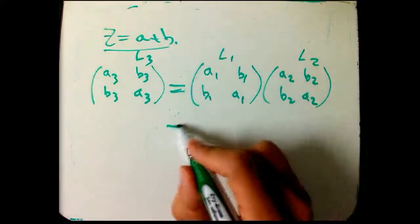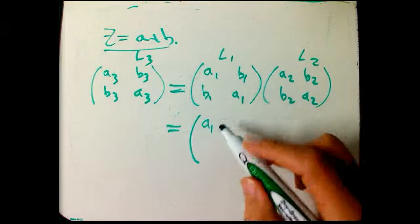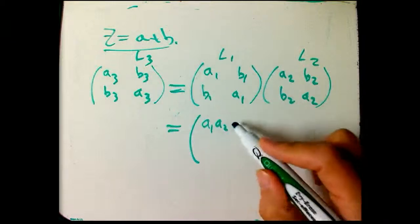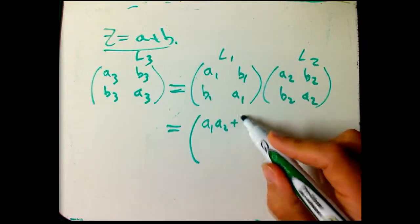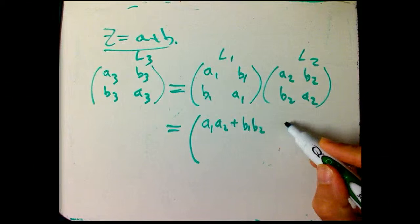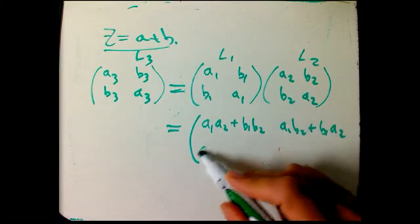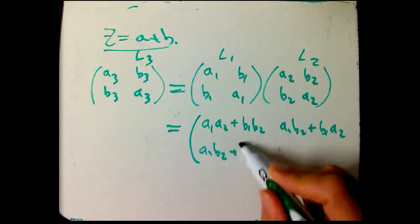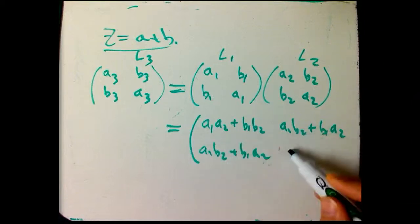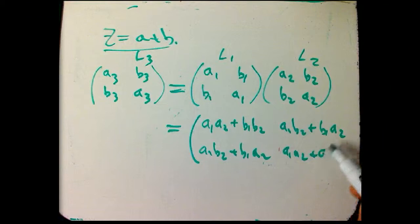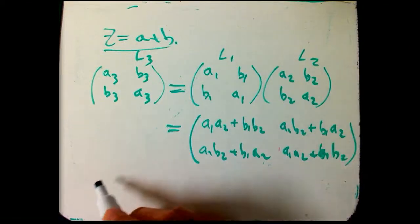So, I'm just going to do this matrix multiplication. That's a1, a2, plus b1, b2. This is a1, b2, plus b1, a2. And then similarly, a1, b2, plus b1, a2 - those have to be equal. And a1, a2, plus b1, b2. If you check it, it does work out.